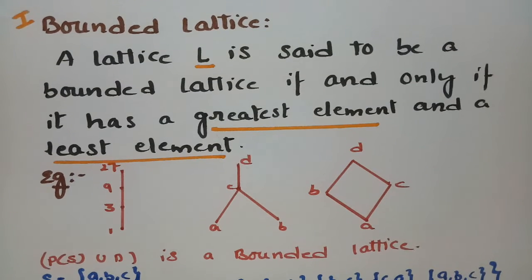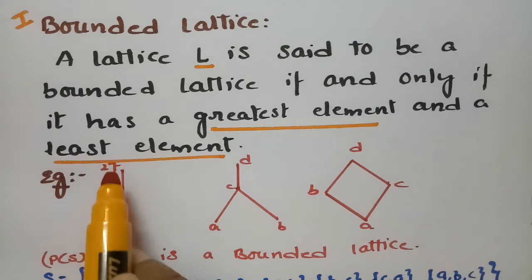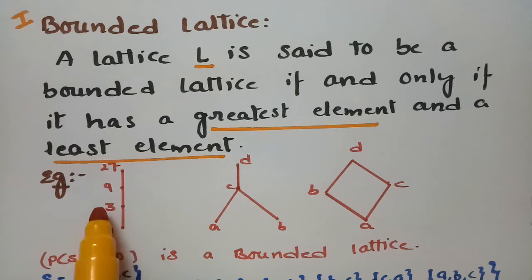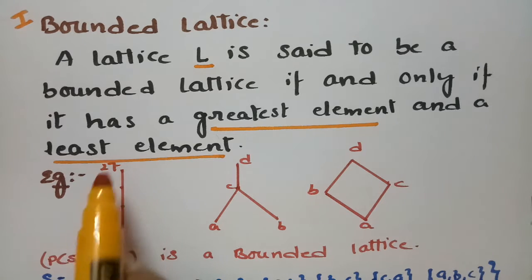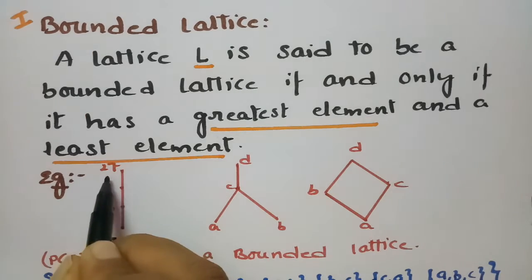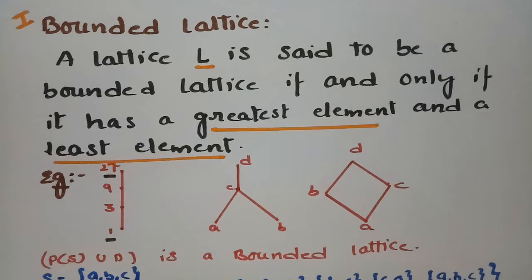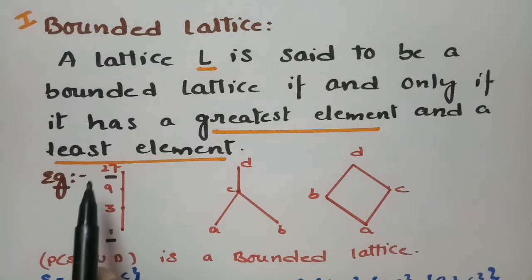For example, consider the set {1, 3, 9, 27} under divisibility: 1 divides 3, 3 divides 9, and 9 divides 27. Here the least element is 1 and the greatest element is 27, so this is a bounded lattice.